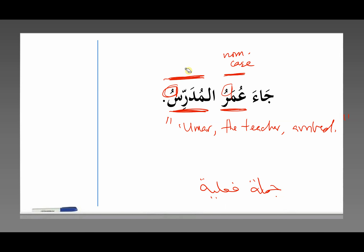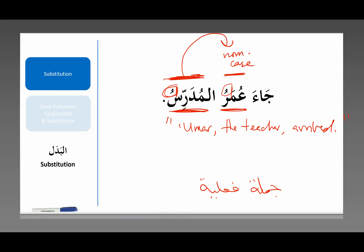This noun here is the substitute of this noun. What do we mean by substitute? In Arabic, this is called البدل — substitution. Notice: you can say جاء عمر — Umar arrived. You can also say جاء المدرس — the teacher arrived. You're referring to the same person in both sentences. You can combine them and say جاء عمر المدرس — Umar, the teacher, arrived — because this and this refer to the exact same person. It's as if this is a substitute for this. That is called بدل — substitution.